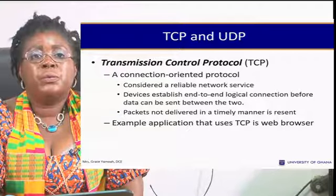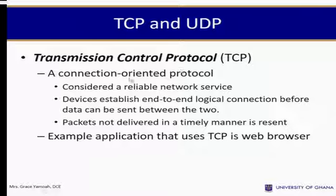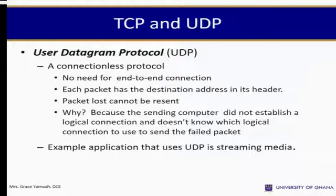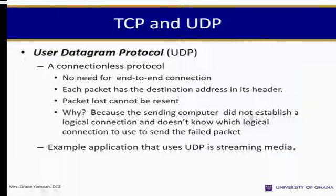The Transmission Control Protocol (TCP) is a connection-oriented protocol that constitutes a reliable network service. Devices establish end-to-end logical connections before data is sent, and packets not delivered in a timely manner are resent. An example application using TCP is a web browser. UDP (User Datagram Protocol) is a connectionless protocol requiring no end-to-end connection; each packet carries the destination address in its header, and lost packets cannot be resent because no logical connection was established. An example application using UDP is streaming media.